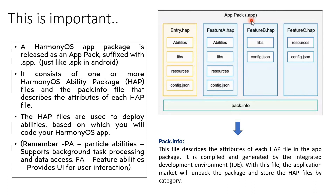There is something called pack.info which describes the attributes of each of the HAP files. Please understand — the pack.info file is very, very important. It will describe the attributes of each HAP file, whether it's entry.hap, feature A.hap, feature B.hap, or any other. It is compiled and generated by the IDE, and the application market uses this file to unpack the package and store the HAP files by category.